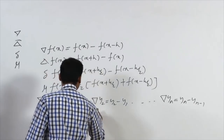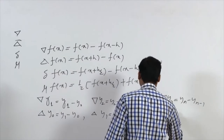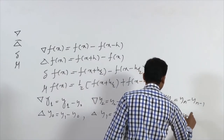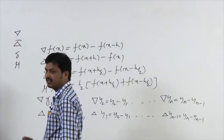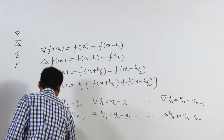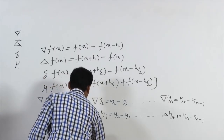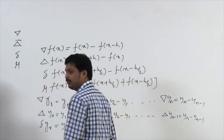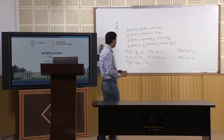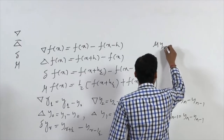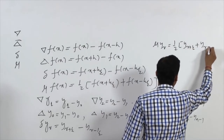Similarly for the central difference operator: δ(yᵣ) = y(r+½) − y(r−½). For the average operator: μ(yᵣ) = (1/2)[y(r+½) + y(r−½)].